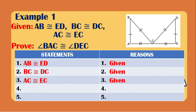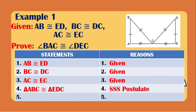For the fourth statement, what are the two congruent triangles? We have triangle ABC is congruent to triangle EDC because of the SSS postulate. Now, since the two triangles are congruent, we can say that angle BAC is congruent to angle DEC because of corresponding parts of congruent triangles are congruent, or CPCTC.